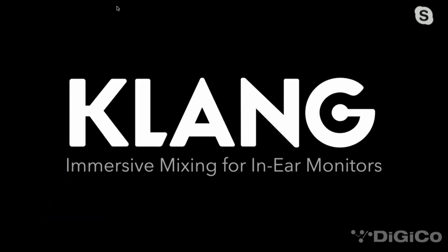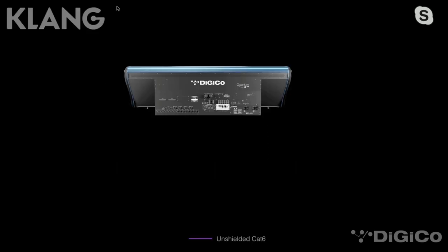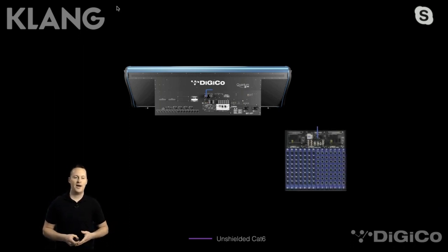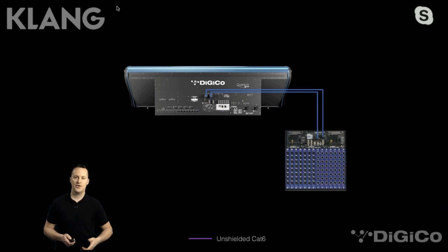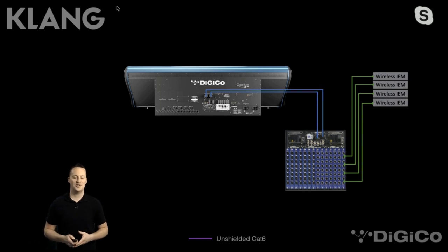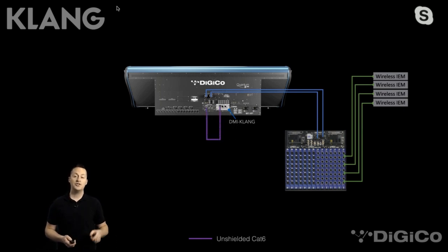Now, Clang. Clang is immersive mixing for in-ear monitors — for musicians or people wearing in-ears on stage. This is designed for monitor engineers in houses of worship or for touring, primarily for those at a monitor console. We connect a Quantum 338 console to an SD rack with 32-bit pre's and 32-bit outputs, wiring the outputs directly to our wireless in-ear transmitters. We add the Clang DMI card into the console and wire it through its network port back to the console's network port. We also need a Mac or PC running the Clang application, networked to the Quantum 338.